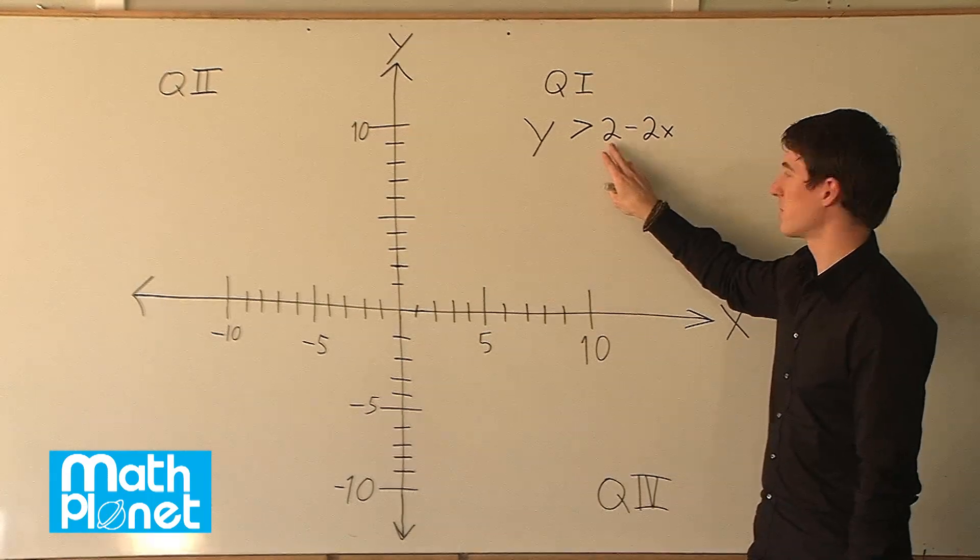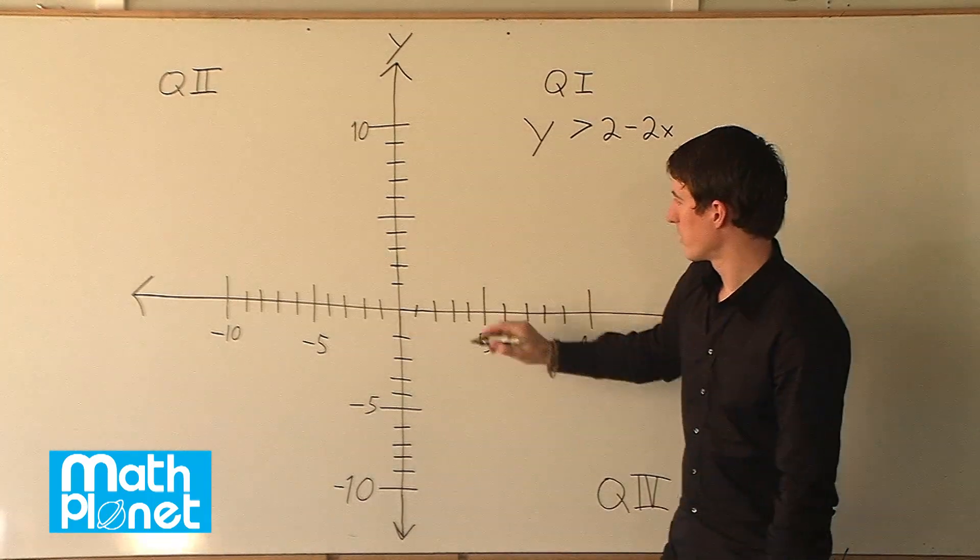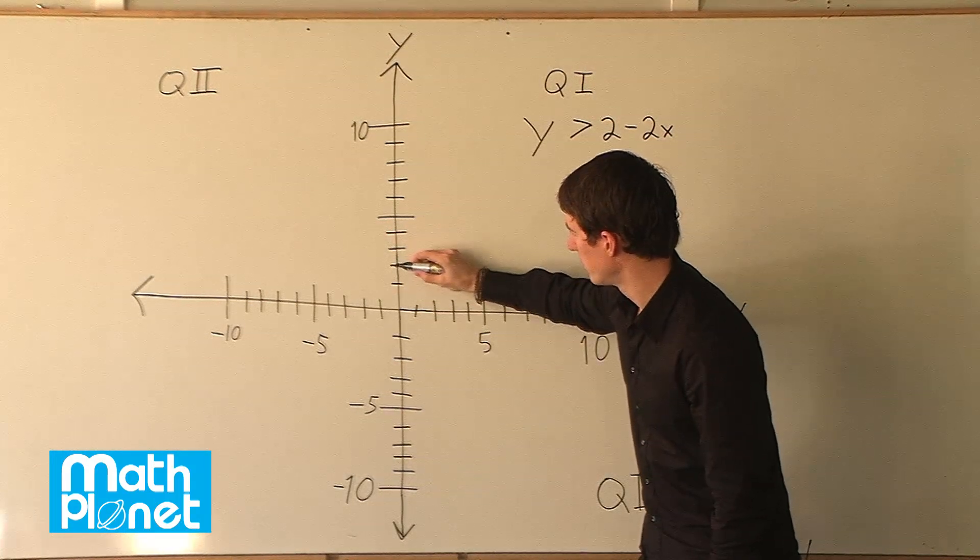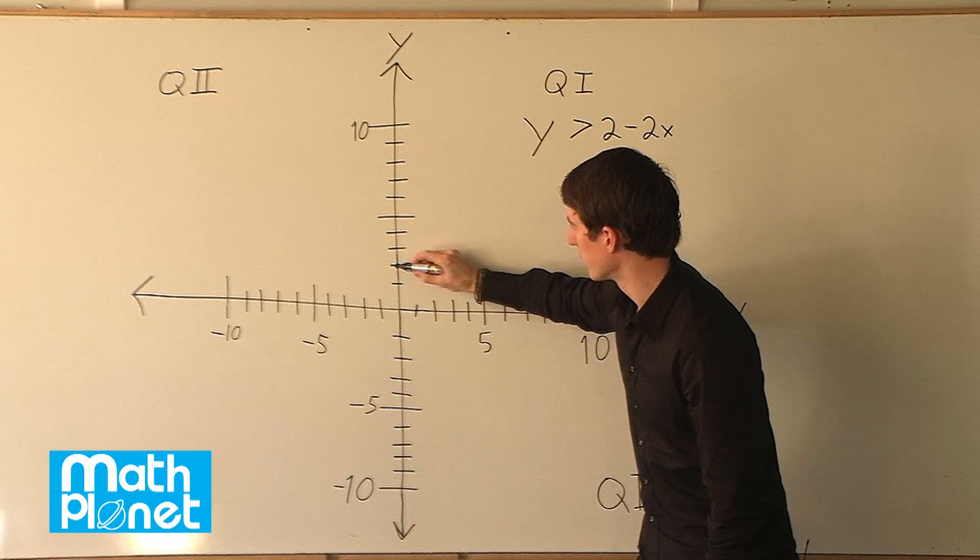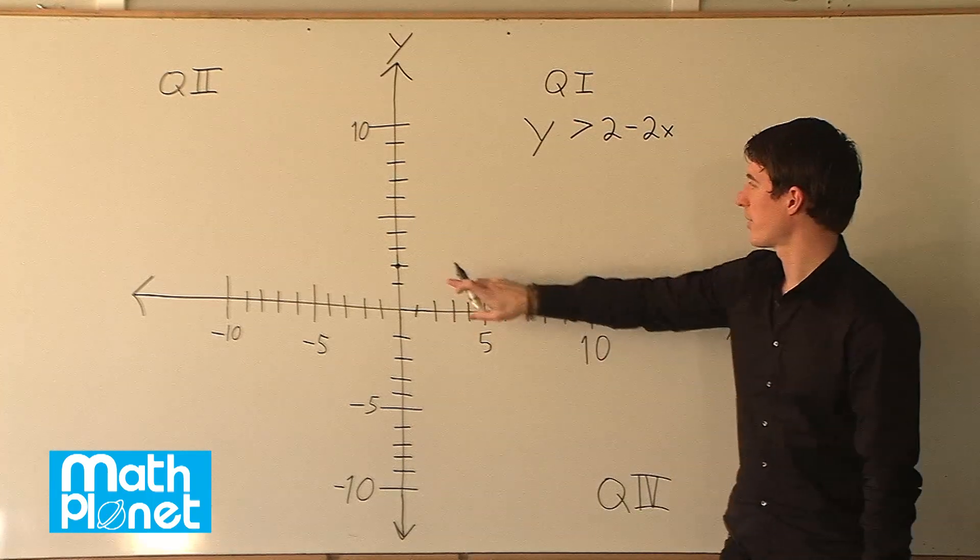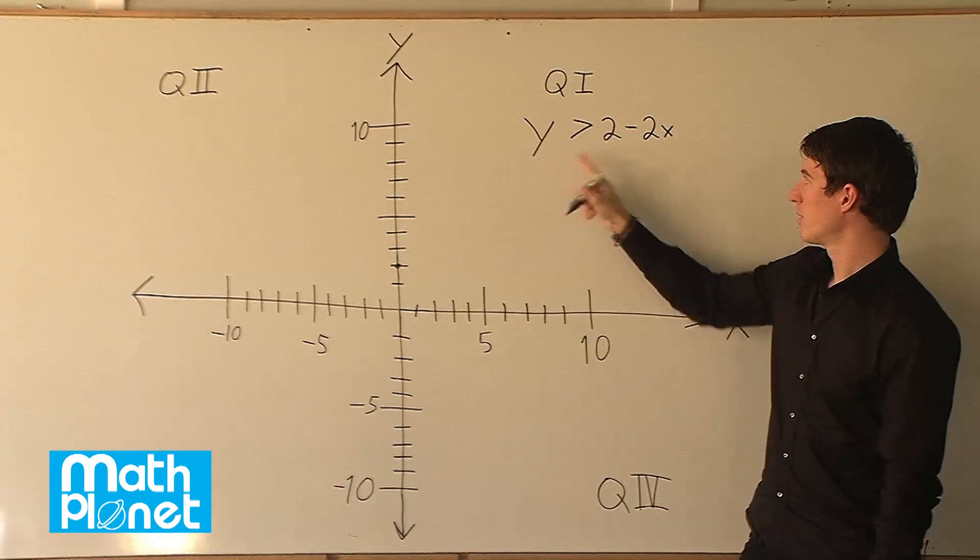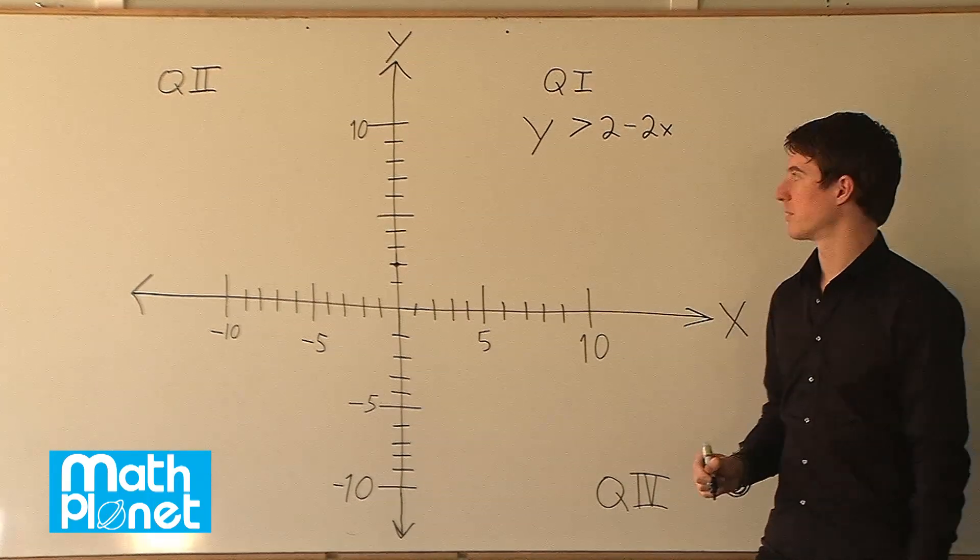The y-intercept is 2, so that means we have a point at x equals 0 and y equals 2, so this point right here. To think about that, we can say if we plug in x is 0 here, what is y? Well, y is just going to be 2 minus 0, or 2.